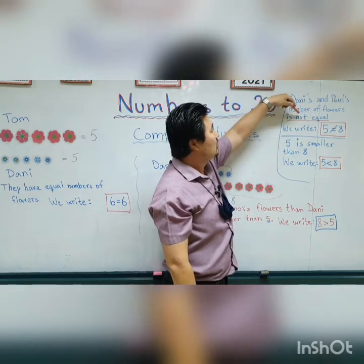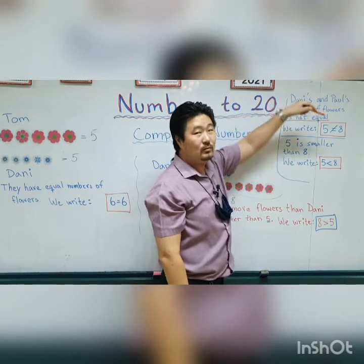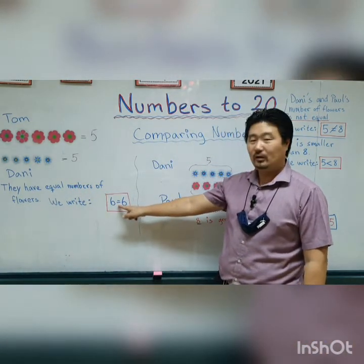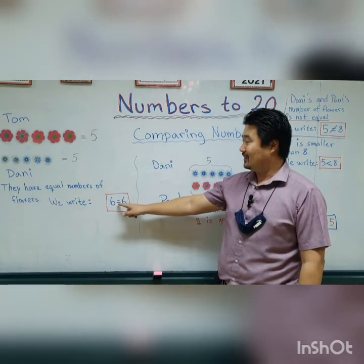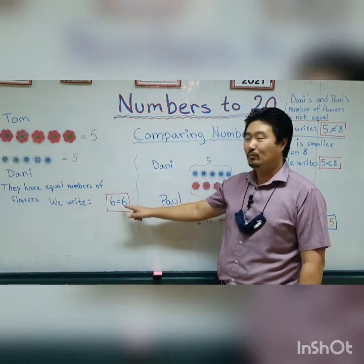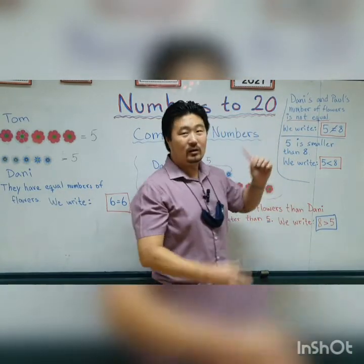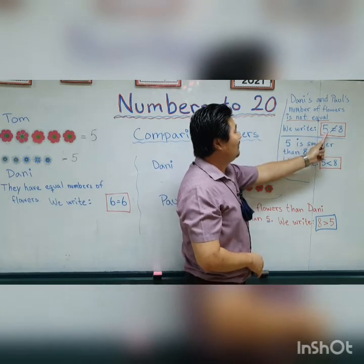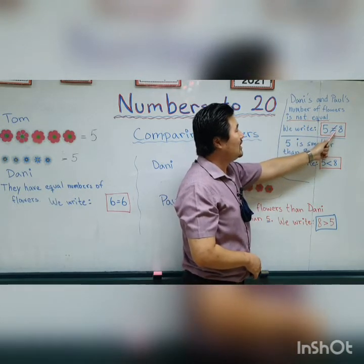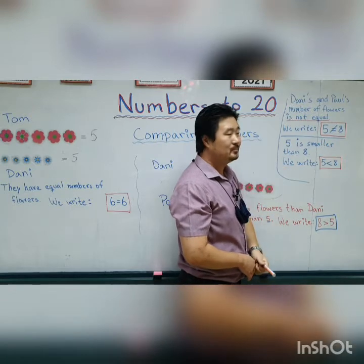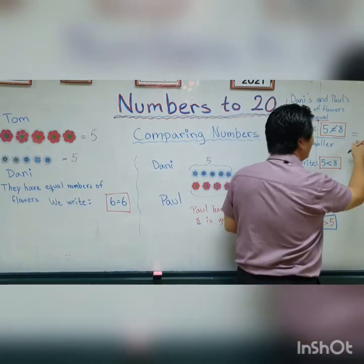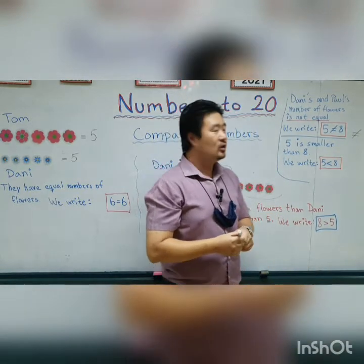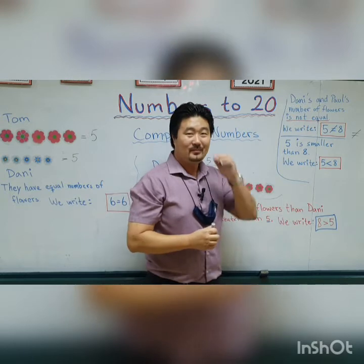And lastly, Danny's and Paul's number of flowers is not equal — not the same. Remember when it says equal, you write six equals six. Now, not equal, not the same — then you write five, equals, and then you cross out the equal, eight. So you cross out the equals sign because they are not the same, not equal.